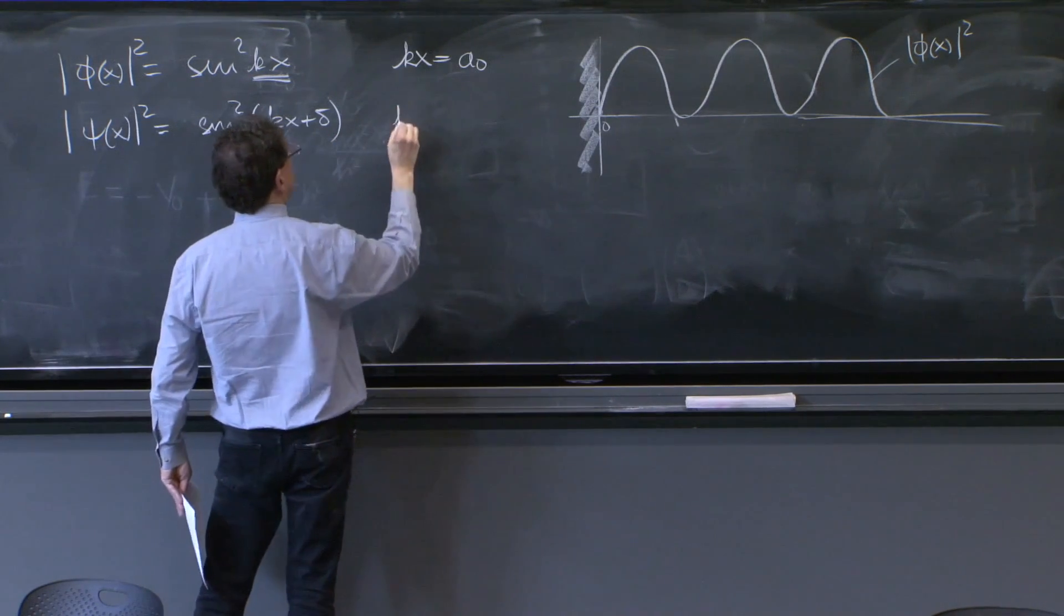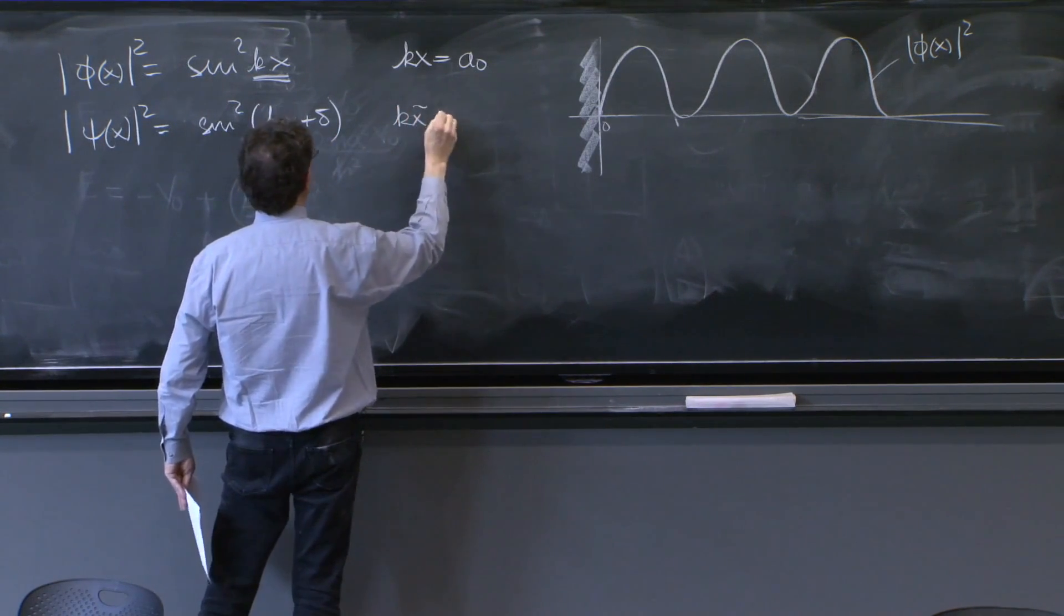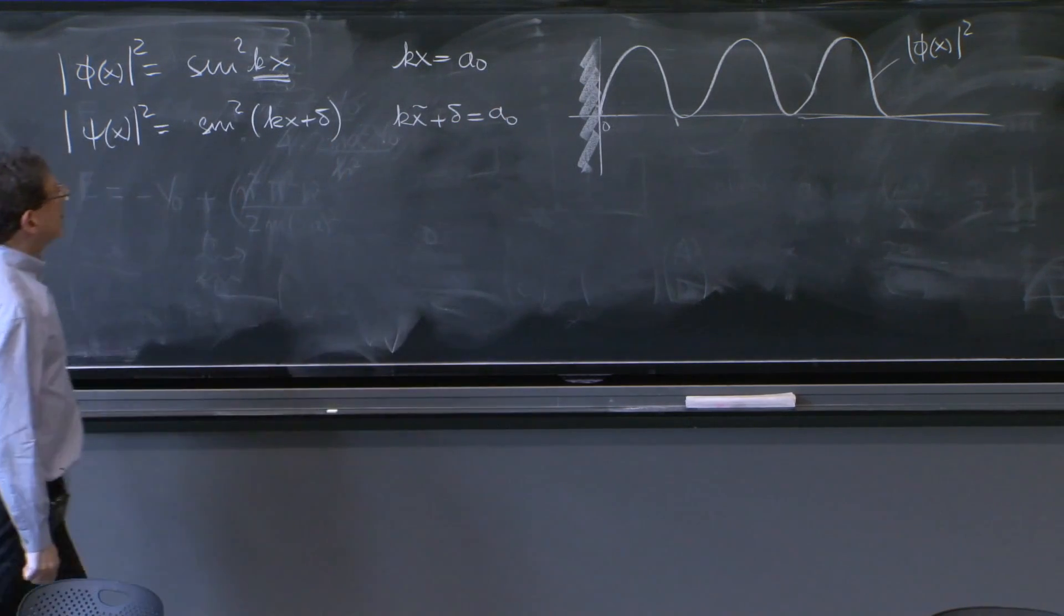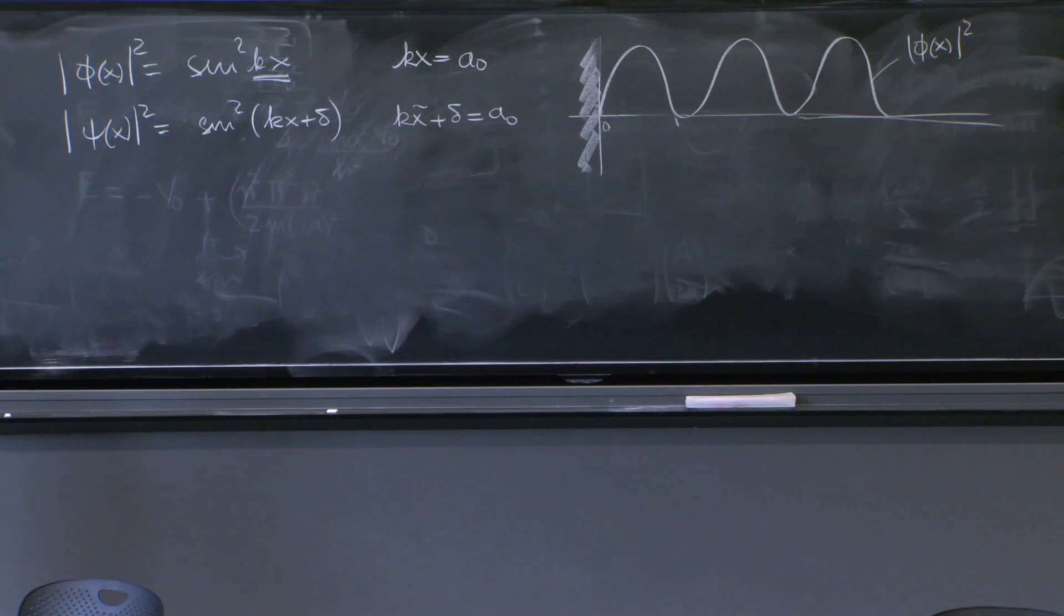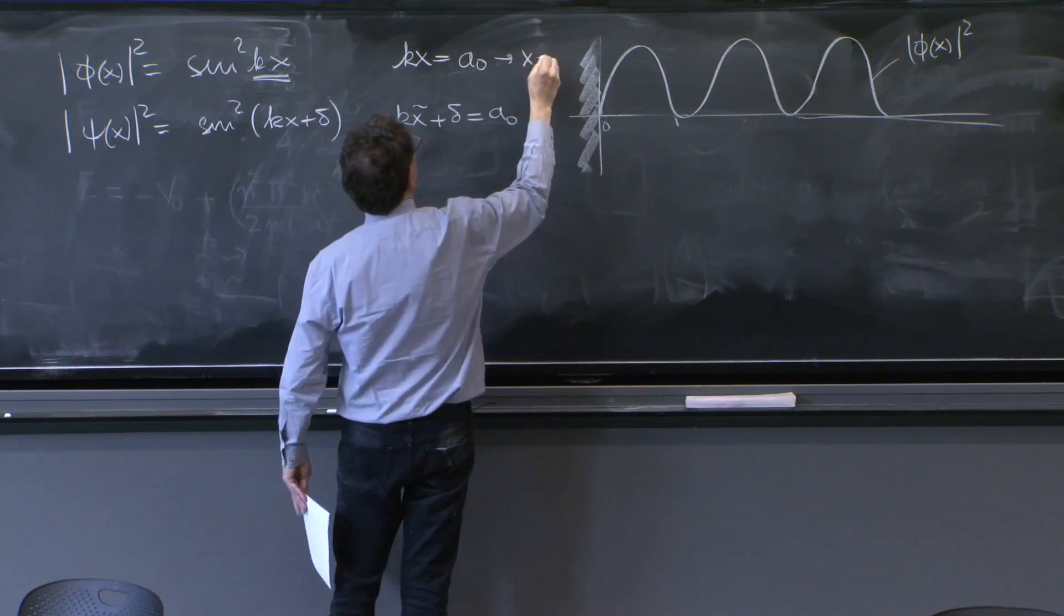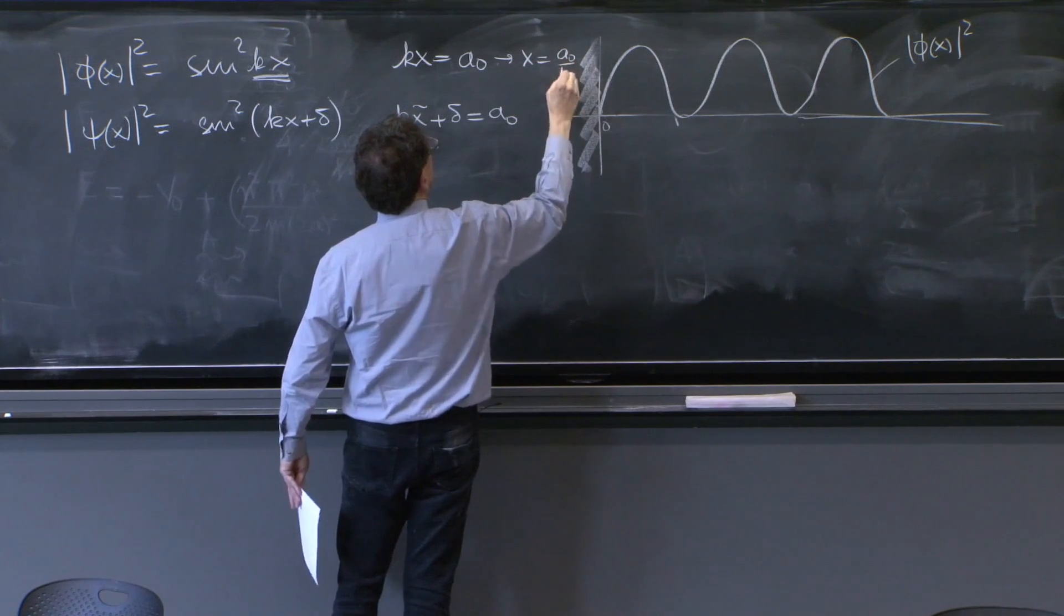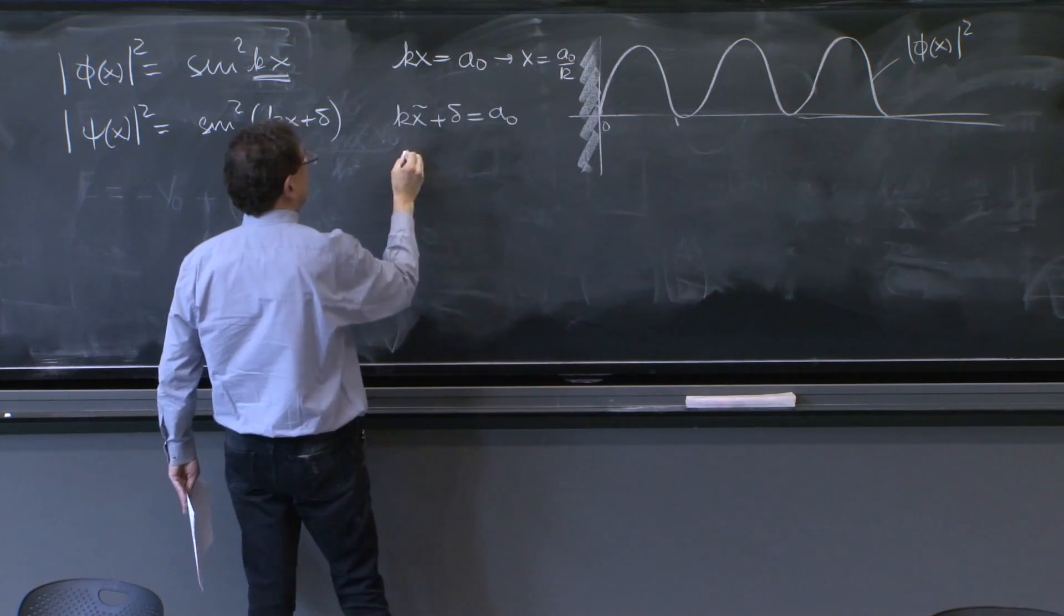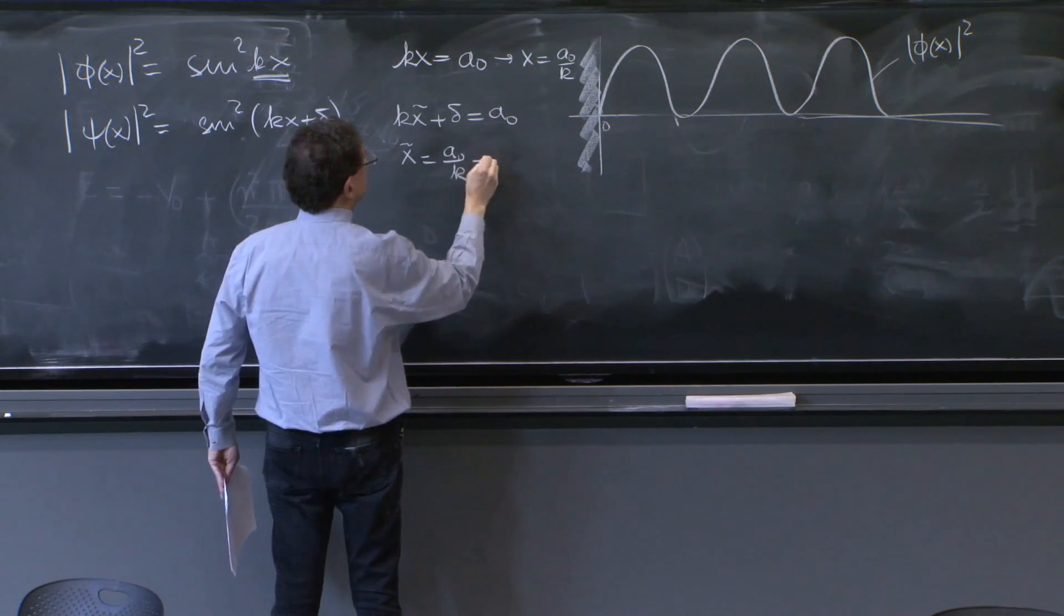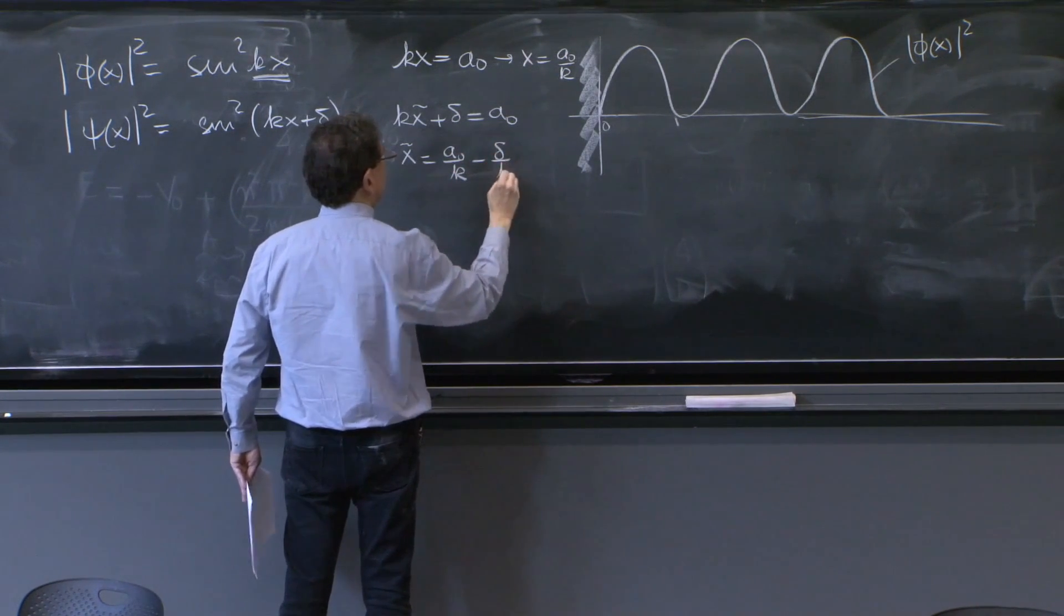Well, the same feature will appear in this case when the whole argument is equal to a0. So while this one happens at x equals a0 over k, here it happens at x tilde equal a0 over k minus delta over k.